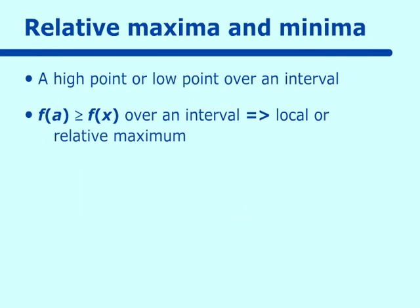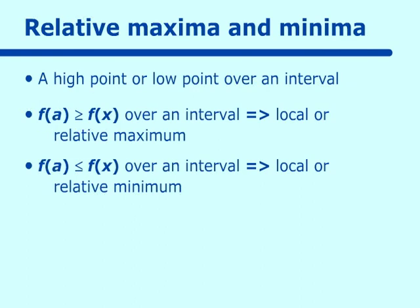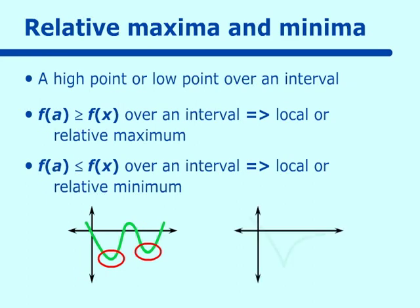The relative minimum reads as some value for y that is less than or equal to other values of y over an interval. Again, this is a local or relative minimum. We just need it to be the lowest point over an interval. This is the lowest point over that interval, and of course we could have any other type of graph and still have it the lowest point over an interval.